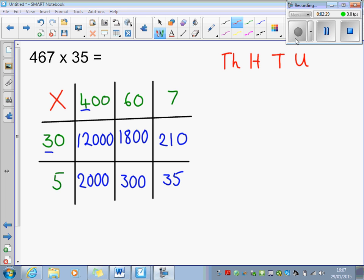So I'm just labeling the columns, the thousands, the hundreds, the tens, and the units. So I would start with my largest number, which is 12,000.